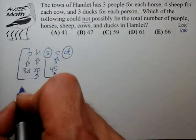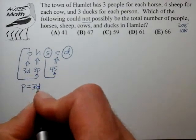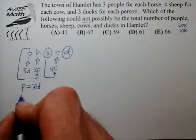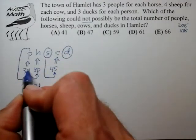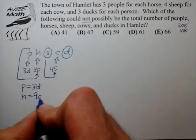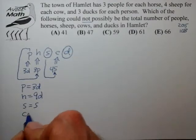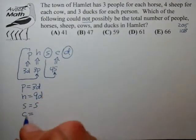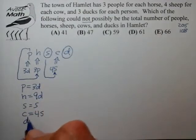So let's go ahead and write that now. We have the number of people equal to three times the number of ducks. We have the number of horses equal to three times the number of people, but that's equal to three times the number of ducks. We have the sheep just equal to the sheep. We have the cows are equal to four times the sheep. And we have the ducks just equal to the ducks.